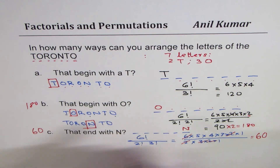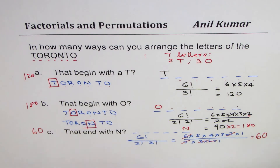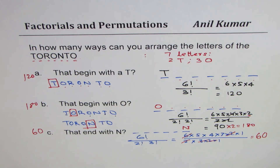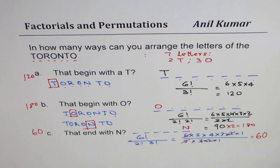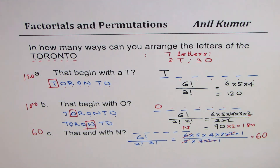So to summarize: 180 in the second case, and 120 in the first case, and 60 for ending with N. I hope you appreciate how, when letters are repeated, seemingly similar conditions can yield different answers — that's the beauty of this topic. That brings me to the end of this video on repeated letters. Feel free to share your views, share my videos, write comments. Thank you and all the best.